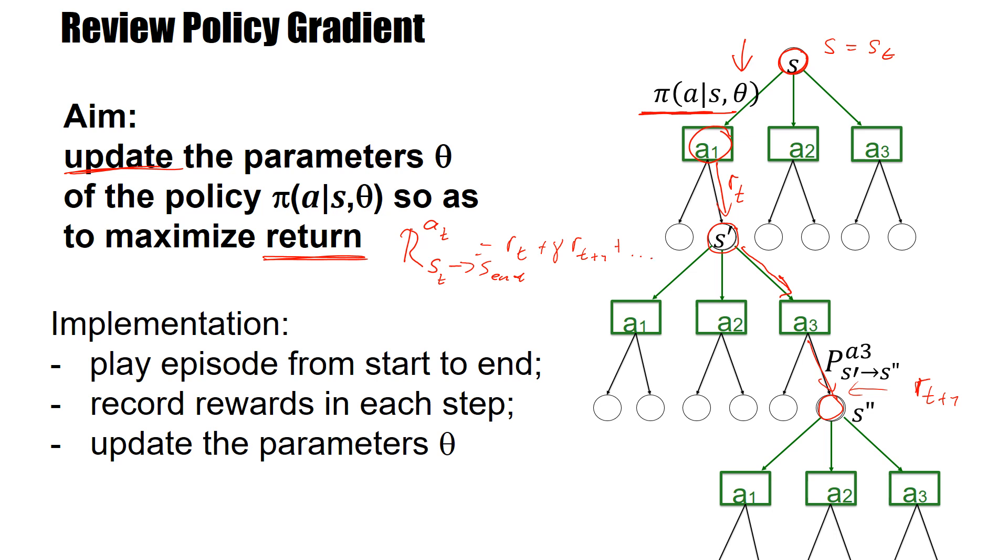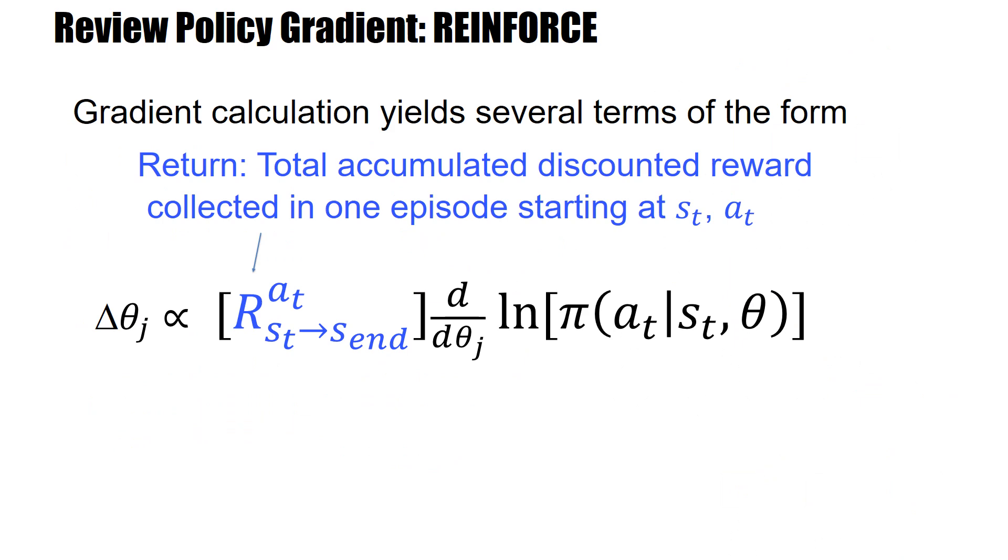The idea is we play an episode starting in s from start to end. While we do this, we record the rewards in each step and calculate the total return. Then at the end of the episode, we update the parameters θ.